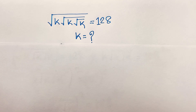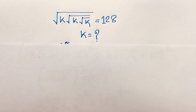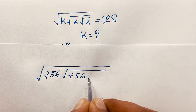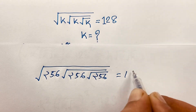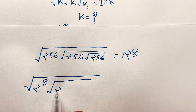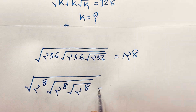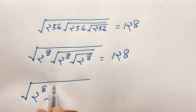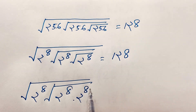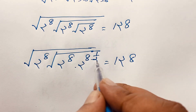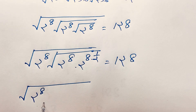Let's check our answer. The expression is square root of k times square root of k times square root of k equals 128. With k equal to 256, that is 2 to the power 8. So we have square root of 2 to the power 8 times square root of 2 to the power 8 times 2 to the power 8. Applying the square root as power 1 over 2, we get 2 to the power 4 for each inner square root term.